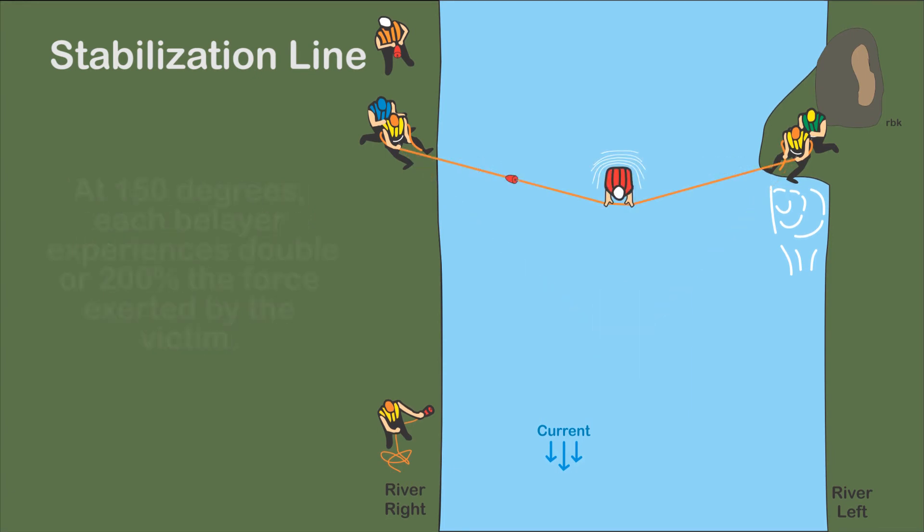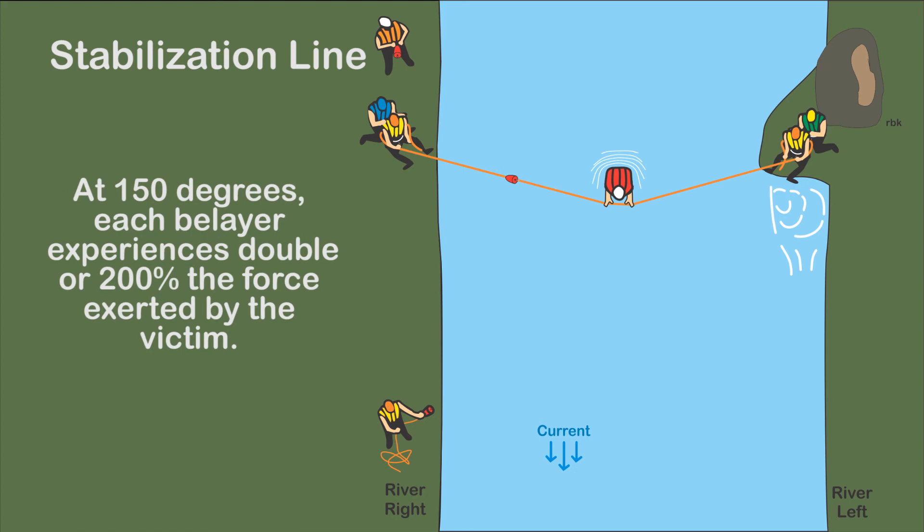Often the angle of the stabilization line is a larger angle. A 150 degree angle is not uncommon. The force on the belayers is now doubled and can easily fatigue them.